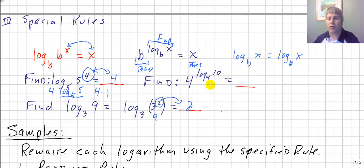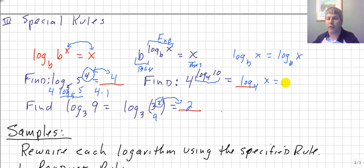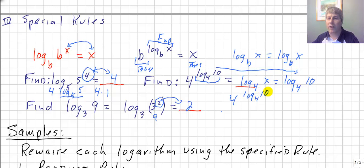Let's look at one with actual numbers. Find 4 raised to log base 4 of 10. We rewrite in log form: log base 4 of x equals log base 4 of 10. These mirror each other — both in logarithmic form — so x equals 10. Therefore, 4 raised to the log base 4 of 10 equals 10.